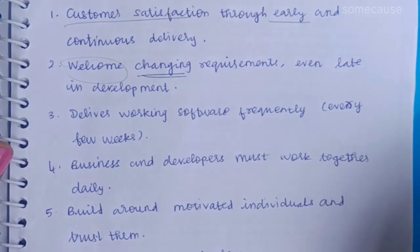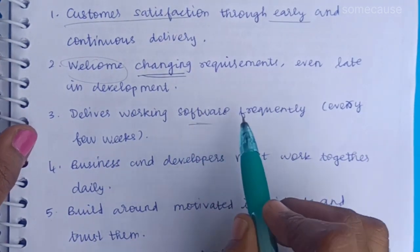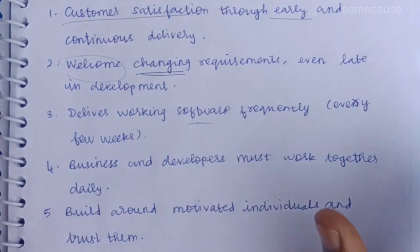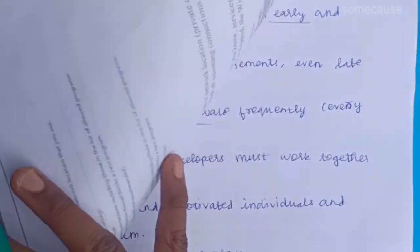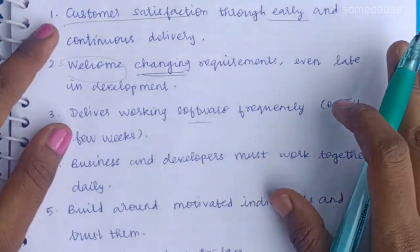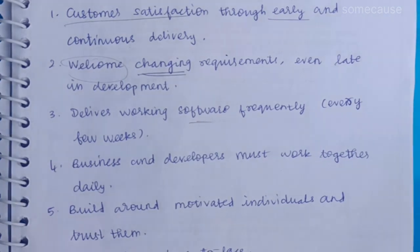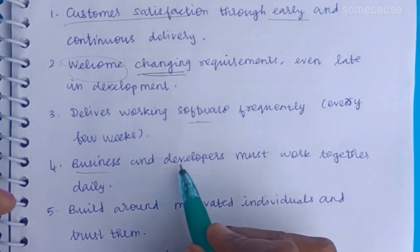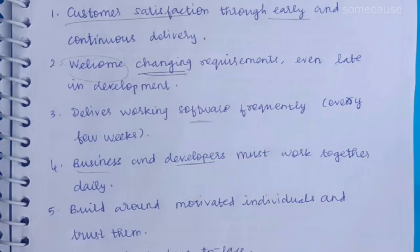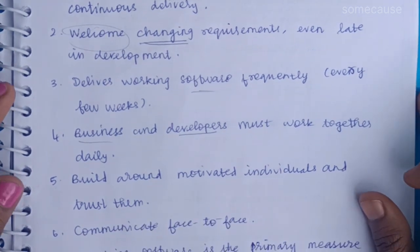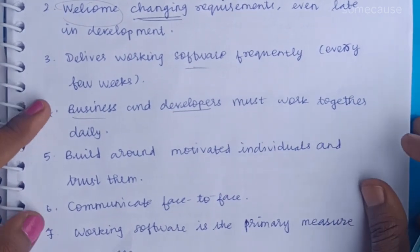The second principle is working delivery, which we should maintain properly. The fourth principle is business: that is the business side — developers work together. The fifth principle is one motivated team. Everyone is motivated, everyone trusts each other, everyone is working together. This is the best way. That is the fifth principle.